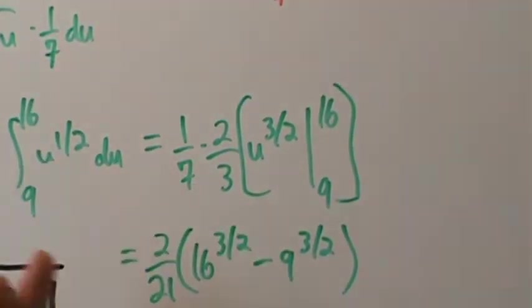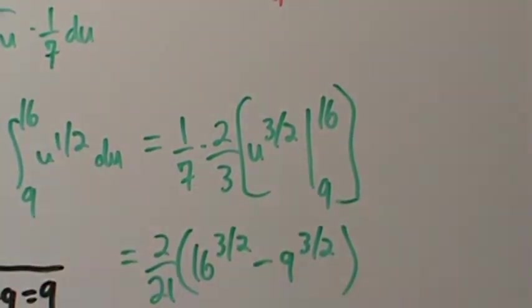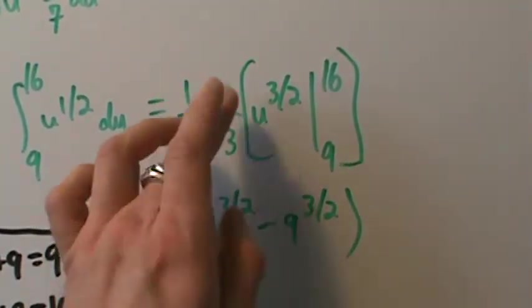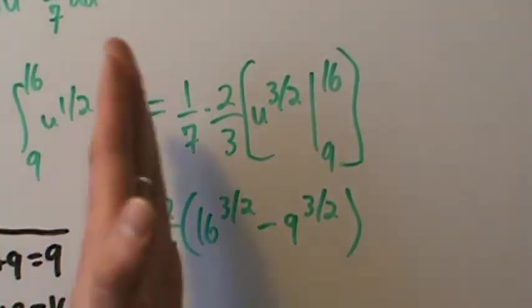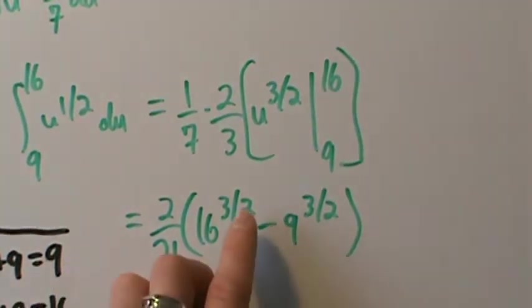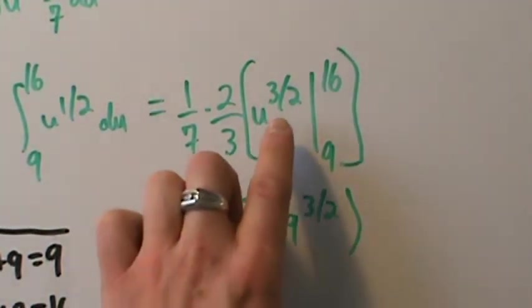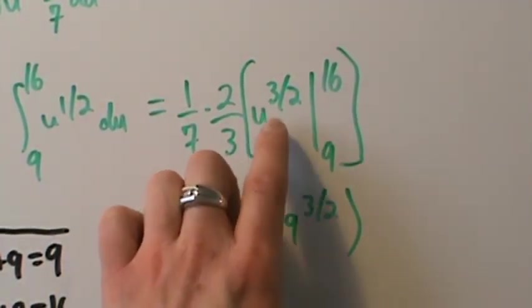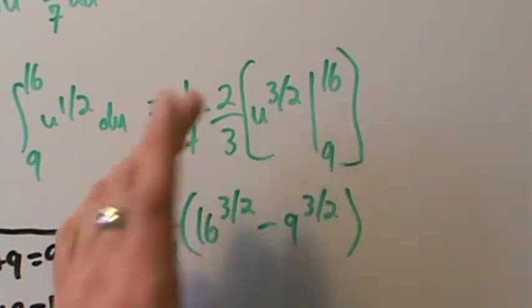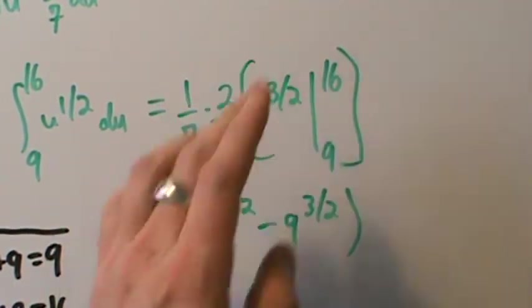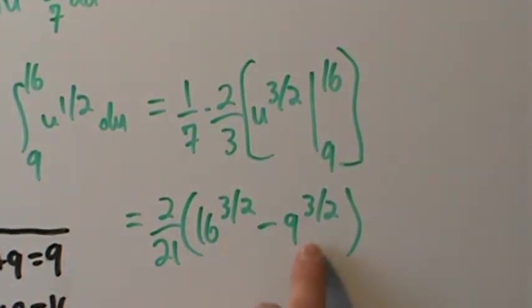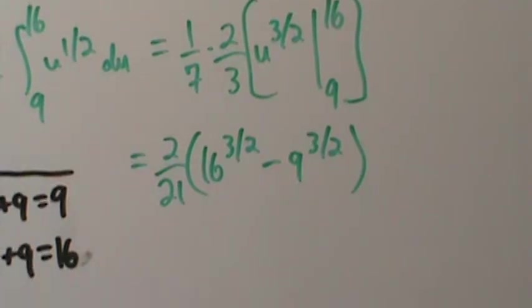We evaluate at 16 and then subtract the evaluation at 9. So we want to simplify 16^(3/2) and 9^(3/2).